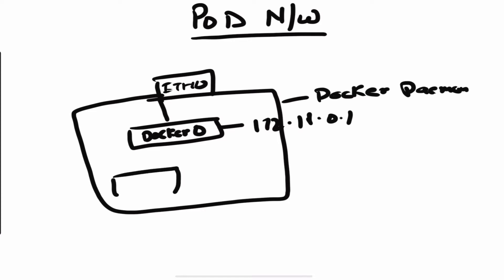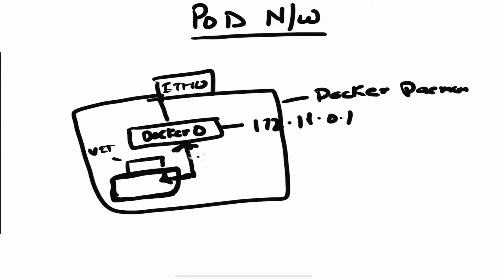Whenever you create a container, what Docker does is it creates a linked pair of virtual ethernet. It attaches one end of that pair to the network namespace of the container and the other end to this docker0 virtual interface. So now this container gets another virtual interface called veth0, and it gets an IP from the same range — let's say dot 2.